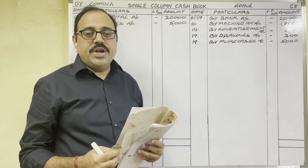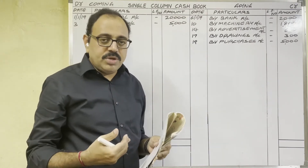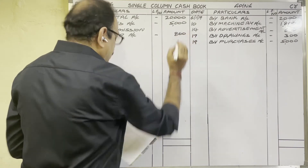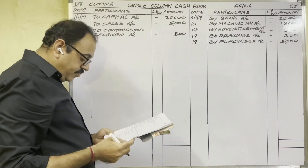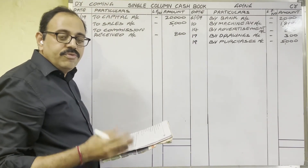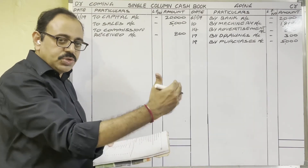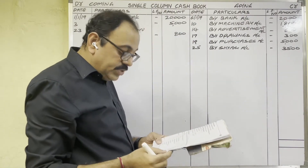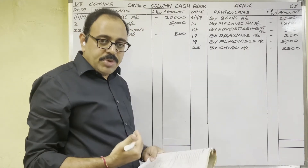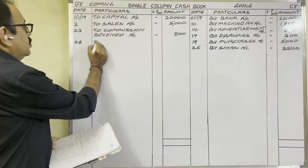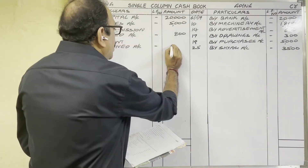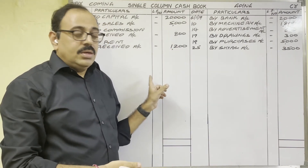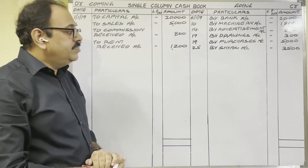23rd January: commission received 800 rupees. Cash is coming into the firm, debit side. Write: 'To Commission Received Account', 800 rupees. 25th January: rent received 2,500 rupees. Cash is coming, debit side. Write: 'To Rent Received Account'. Then a further entry of 1,200 rupees on the credit side is recorded. Posting is now completed.